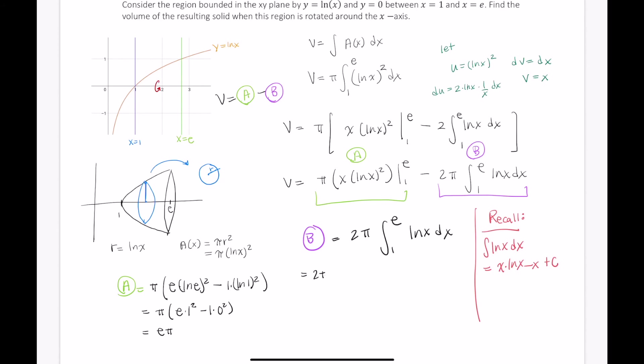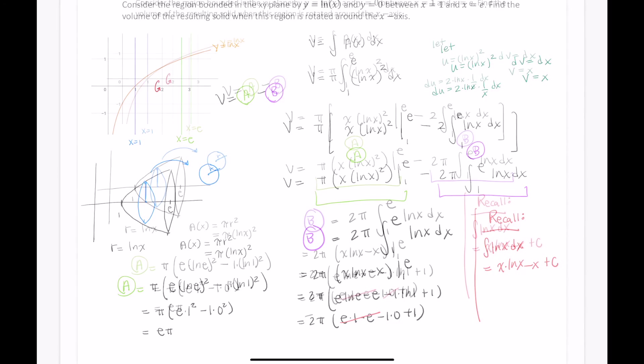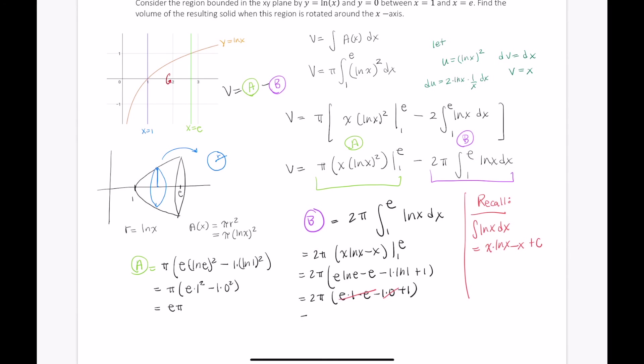So B is equal to 2π times x ln of x minus x from 1 to e. So that's 2π times e ln of e minus e minus 1 times ln of 1 plus 1. So this becomes 2π times e times 1 minus e minus 1 times 0 plus 1. e times 1 is just e, minus e will just be 0, so this term here goes away. 1 times 0 is just 0, so that also goes away. So B is just equal to 2π.